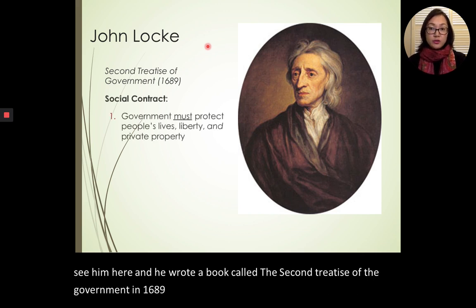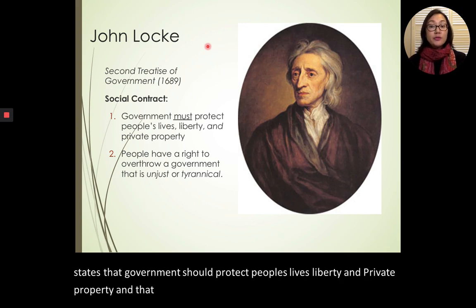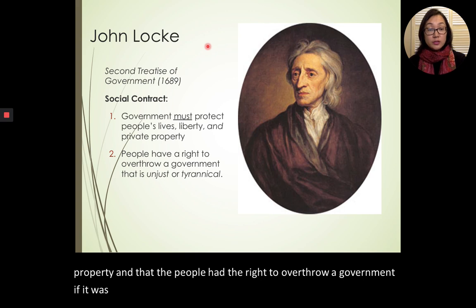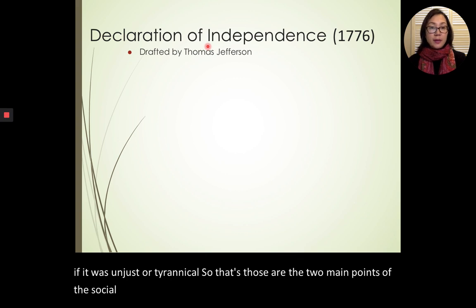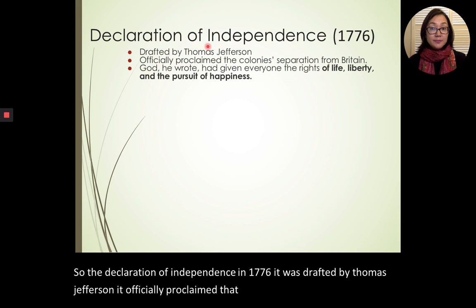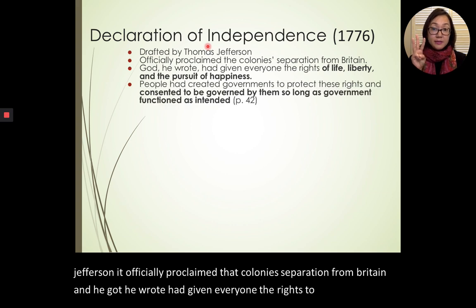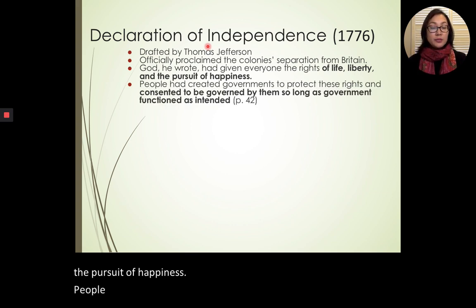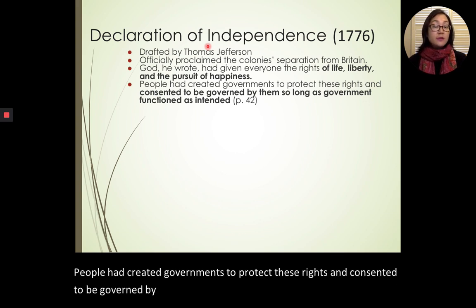Here is a picture of John Locke. He wrote a book called the Second Treatise of Government in 1689. He wrote about the social contract, which states that government should protect people's lives, liberty, and private property, and that the people had the right to overthrow a government if it was unjust or tyrannical. Those are the two main points of the social contract.